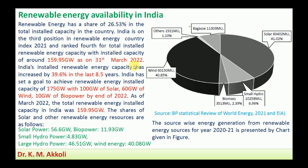India is ranked fourth in the world for total installed renewable energy capacity, with an installed capacity of around 159.95 gigawatt as on 31st March 2022. India's installed renewable energy capacity has increased by 39.6 percent in the last 8.5 years.